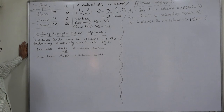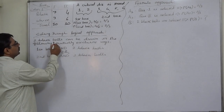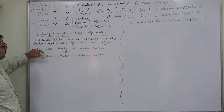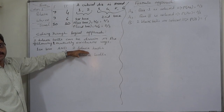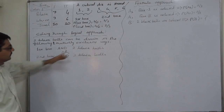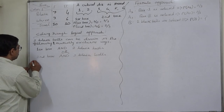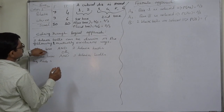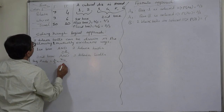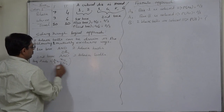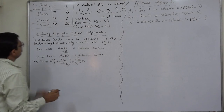Two black balls can be drawn in the following two mutually exclusive ways: first, the first box is selected as a result of the die toss and two black balls are drawn from it; or second, the second box is selected and two black balls are drawn from it. So the probability of two black balls equals: P(first box) × 7C2/10C2, which is 1/3 × 7C2/10C2, or P(second box) × 4C2/10C2, which is 2/3 × 4C2/10C2.